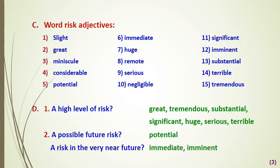Exercise number C: these adjectives can be used with the word risk — complete them with the missing vowels. I've already completed them for you. Number one: slight. Number two: great. Number three: minuscule. Number four: considerable. Number five: potential. Number six: immediate. Number seven: huge. Number eight: remote. Number nine: serious. Number ten: negligible. Number eleven: significant. Number twelve: imminent. Number thirteen: substantial. Number fourteen and fifteen: terrible and tremendous.